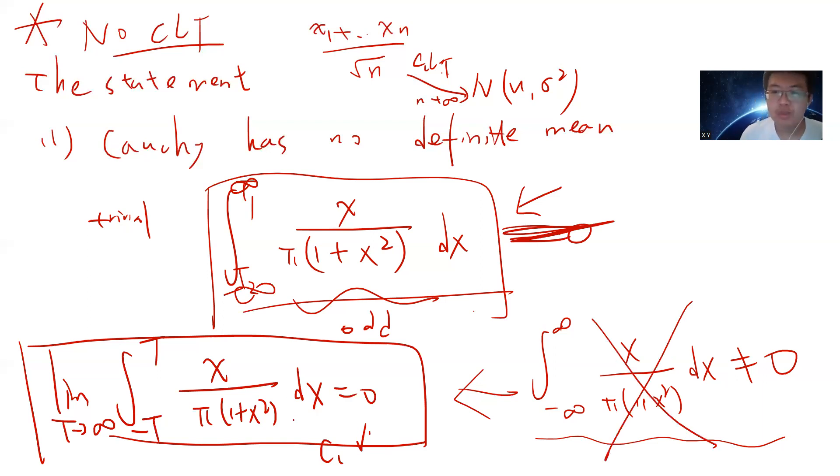This is ill-defined, but this guy is well-defined, right? Because this is t to negative t, so this guy for fixed t must be zero. Take t to infinity, must be zero. This is the reason why people say Cauchy has no definite mean.